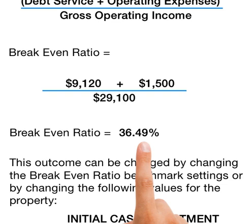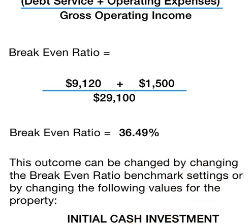There are other ways of calculating the break-even ratio and other indicators. There is a mobile application called RealBench — R-E-A-L-B-E-N-C-H — that allows you to calculate the break-even ratio and other indicators right from your mobile phone. Go to realbench.net, or search for RealBench on Google Play or the Apple Store. This concludes our session. Thank you so much.